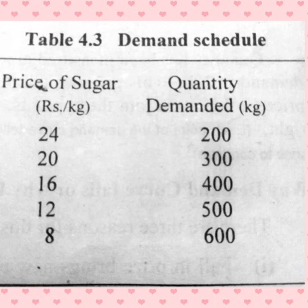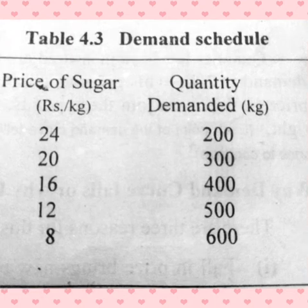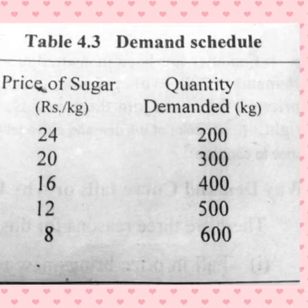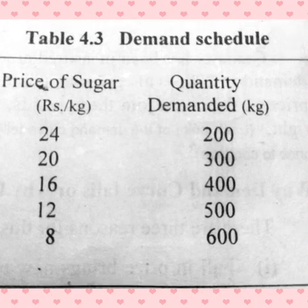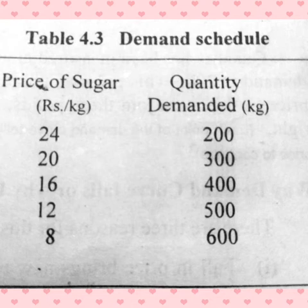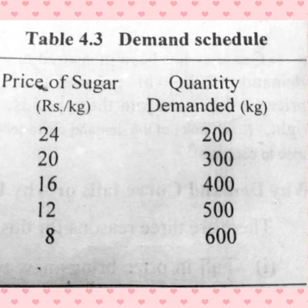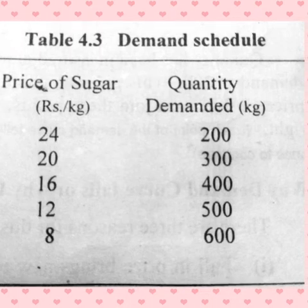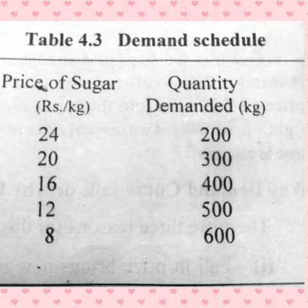As you can see in the given example, this demand schedule for sugar shows that when the price is 24 rupees per kg, people buy 200 kg of sugar. But when the price levels start falling, demand expands — larger and larger quantities are demanded — and at the price of 8 rupees, the quantity demanded is 600 kg. So that is all about the demand schedule.